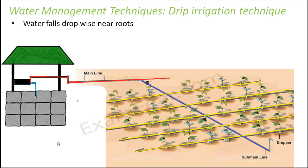With the drip irrigation technique, the water that reaches the plants is only as much as is needed by the plant. Let's say this is your agricultural field — you have pipelines through which water flows. A boring is done and a motor pumps water from below the ground. This groundwater is then supplied to the field through pipelines.